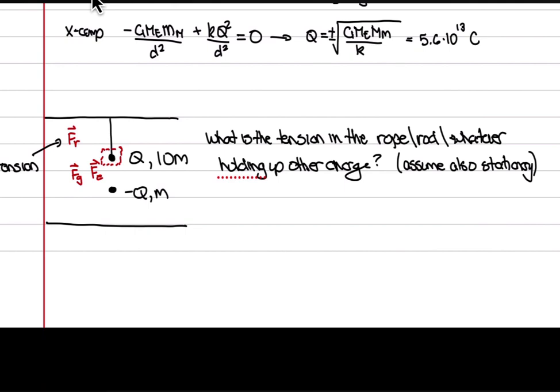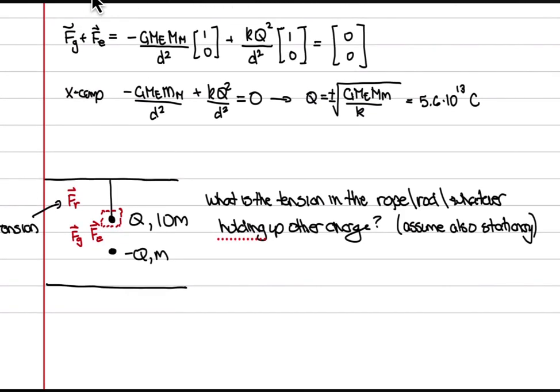The normal force — I always call it the bathroom scale force. If you stand stationary on a bathroom scale, your weight mg is balanced by the normal force, so the scale reads mg. If I then push down on your shoulders while you're standing on the scale, the reading goes up because the surface must push back against both gravity and my additional downward force to ensure you don't sink into the floor.